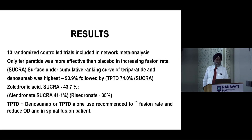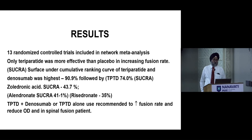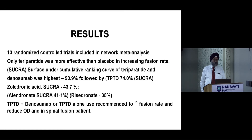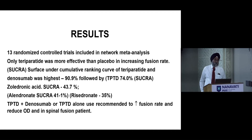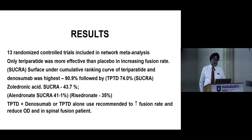The results show 13 randomized controlled trials included in the network meta-analysis. Only teriparatide was more effective than placebo in increasing fusion rate. Using the SUCRA (Surface Under the Cumulative Ranking Curve) analysis: teriparatide has the highest SUCRA at 90.9%, denosumab is next at 74%, zoledronic acid at 43.7%, alendronate at 41%, and risedronate at 35%. Teriparatide plus denosumab, or teriparatide alone, is recommended to increase fusion rate and reduce osteoporosis in spinal fusion patients.